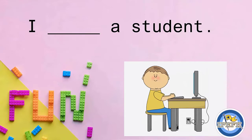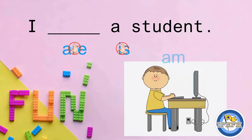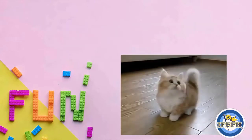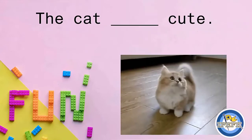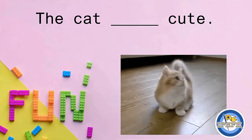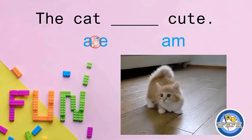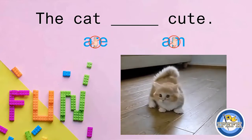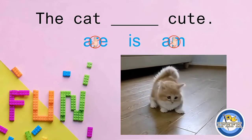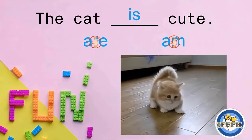Now we have I. Remember that I is for the special person. So: 'I are a student' — incorrect. 'I is a student' — incorrect. 'I am a student' — that is the correct answer. Now let's see: we have the cat. How many cats do we have? We have only one cat. Is it going to be with 'are'? No, incorrect. Is it going to be with 'am'? No, because I am not a cat. So the correct answer is: the cat is cute.